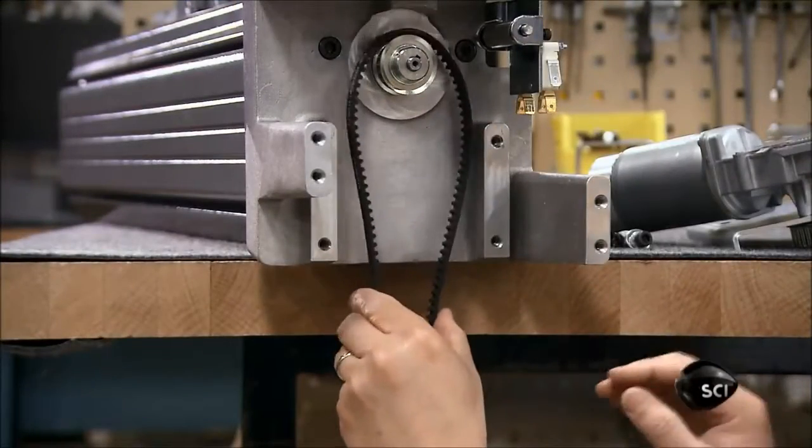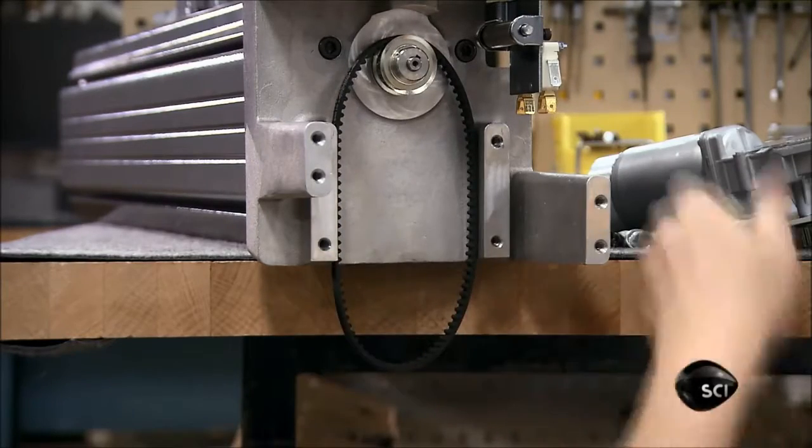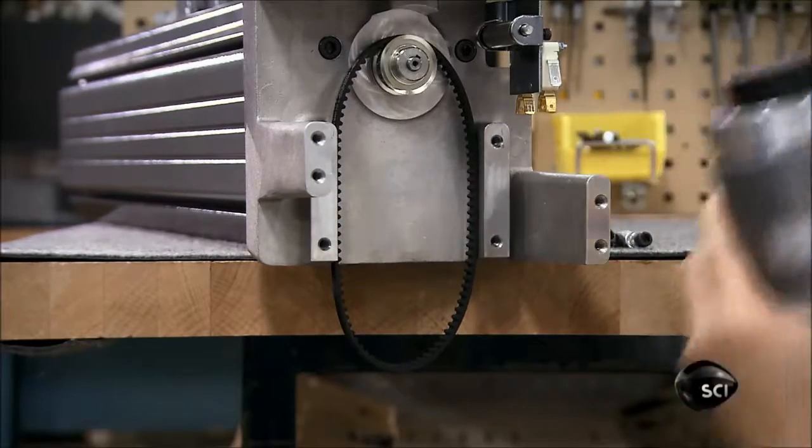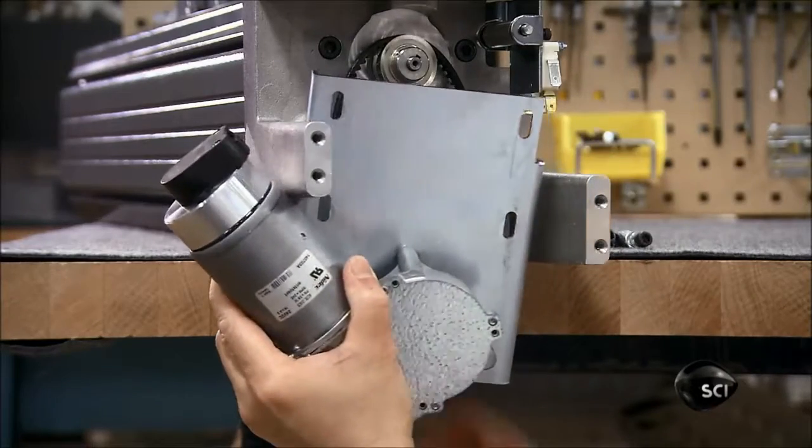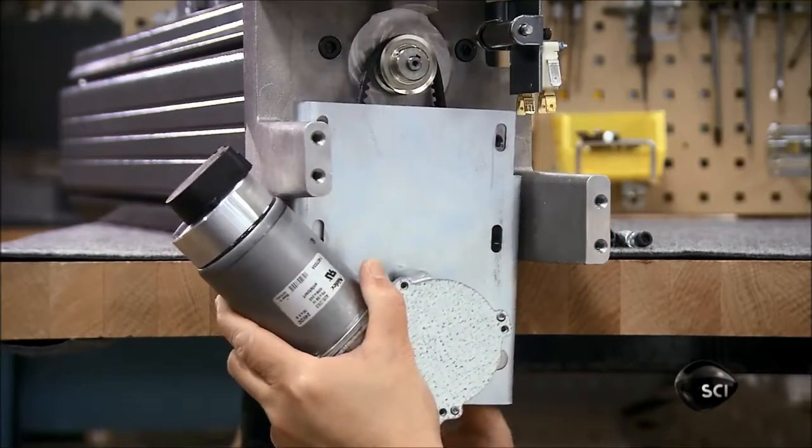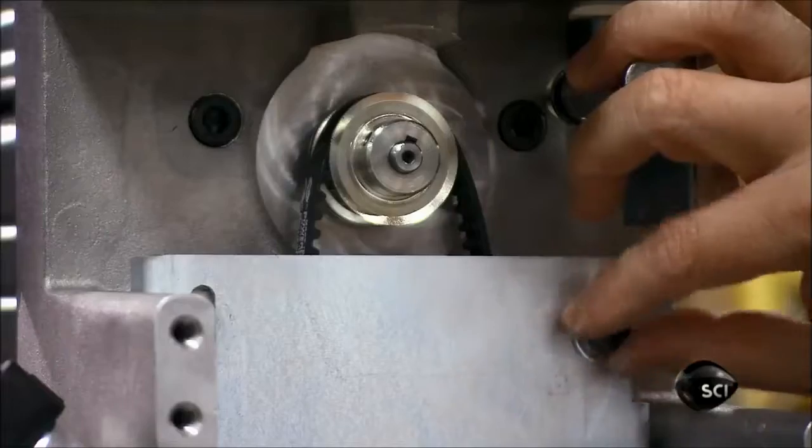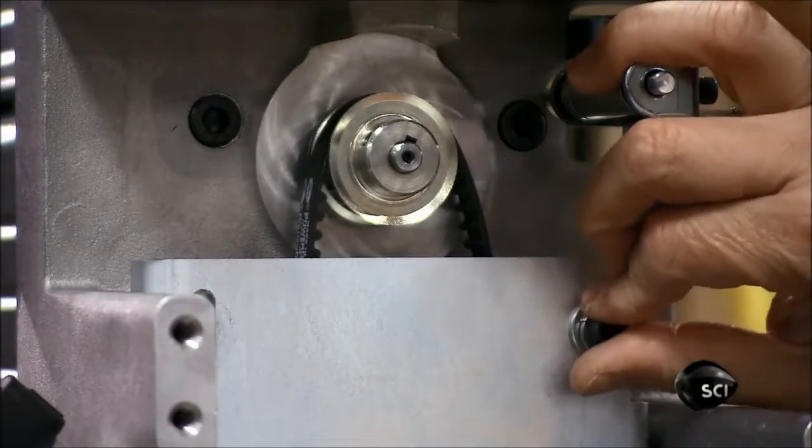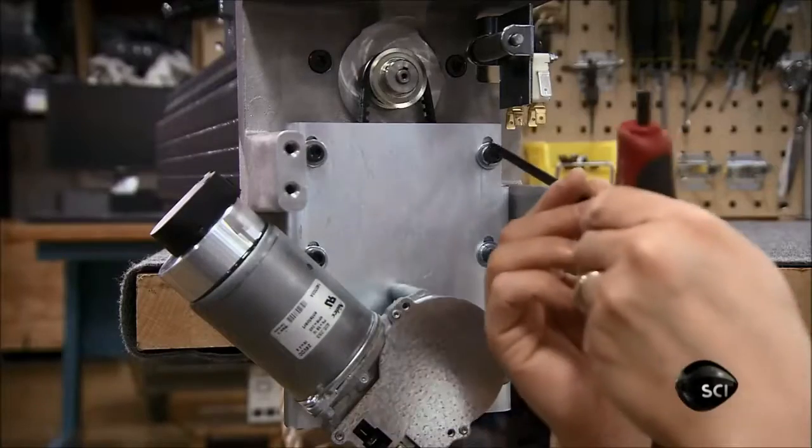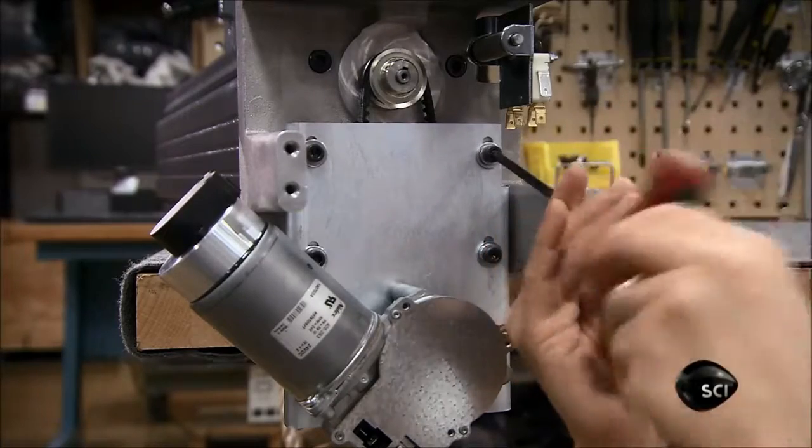Next, he threads a rubber belt around a pulley attached to the end of the lead screw. He installs the motor and wraps the other end of the rubber belt around the motor pulley. This motor drive assembly is what will turn the lead screw to move the force arm.